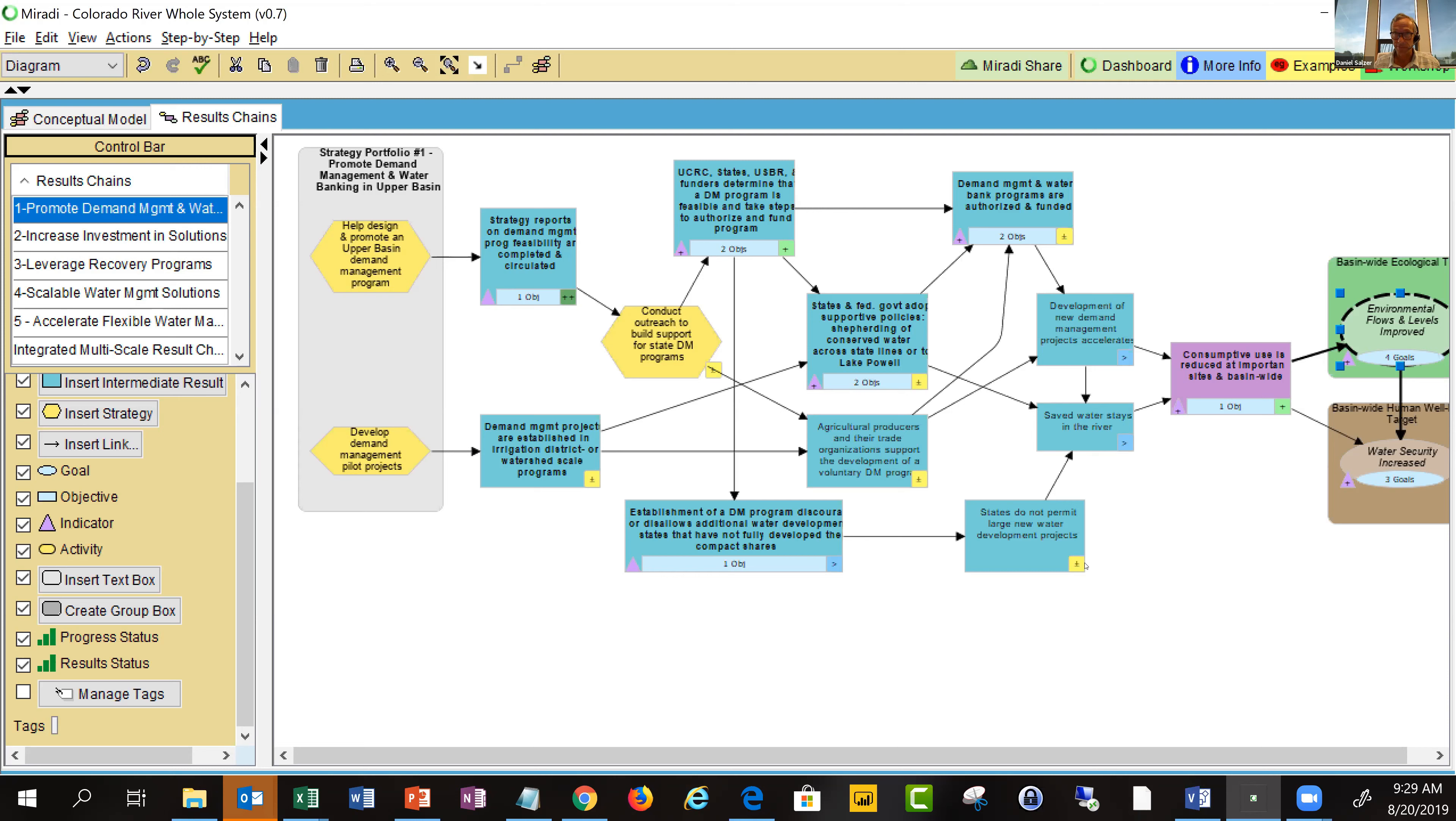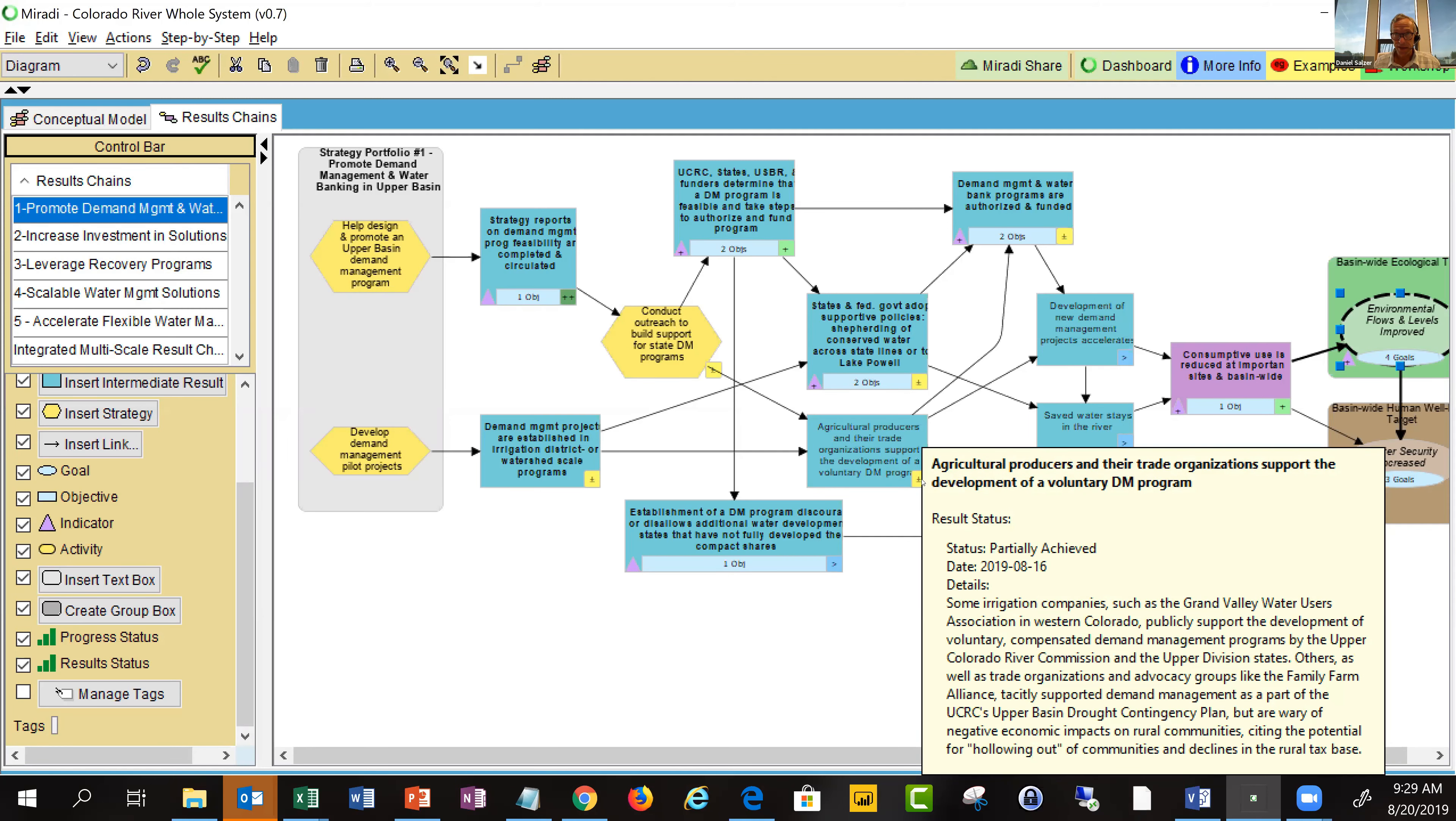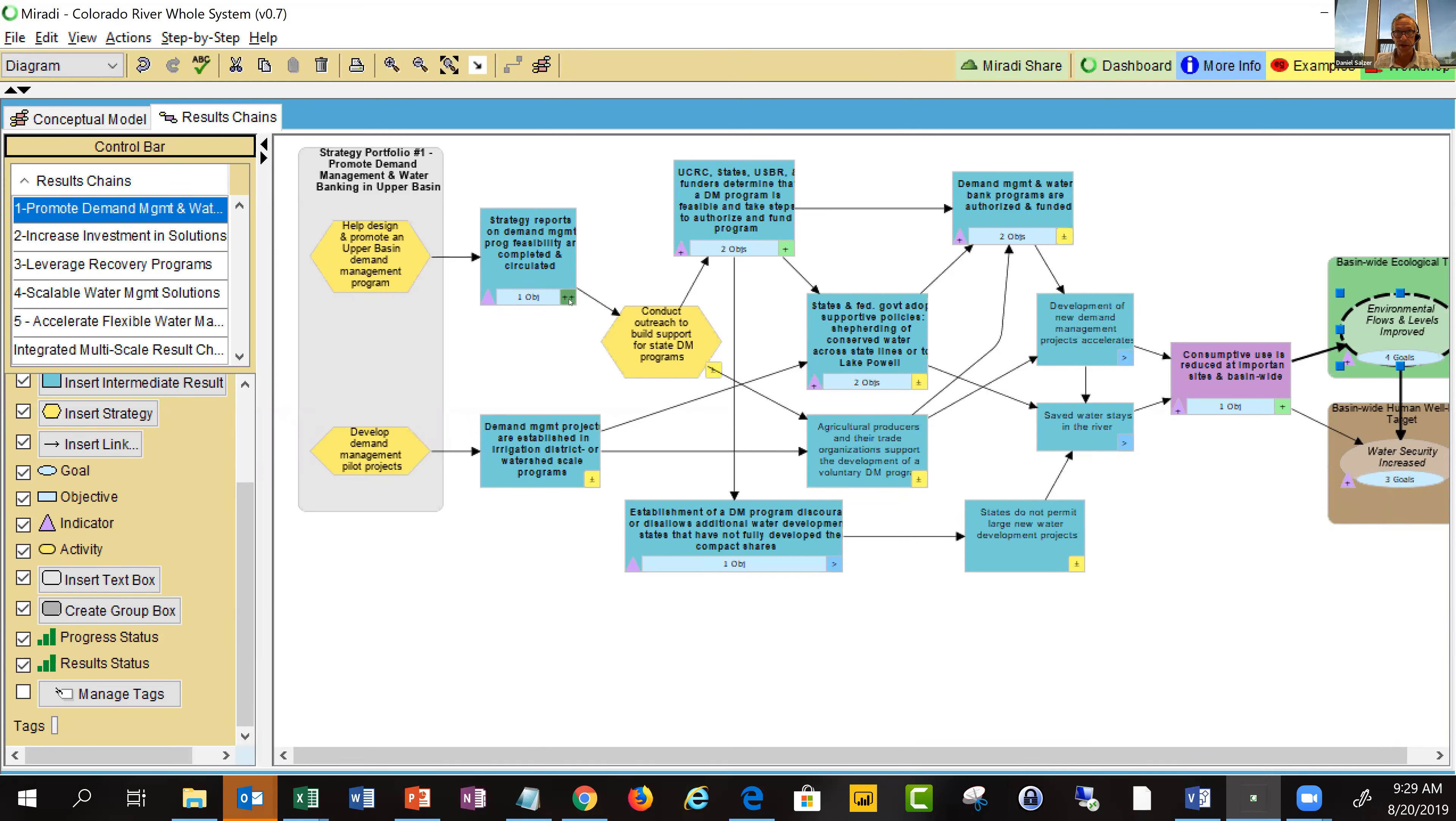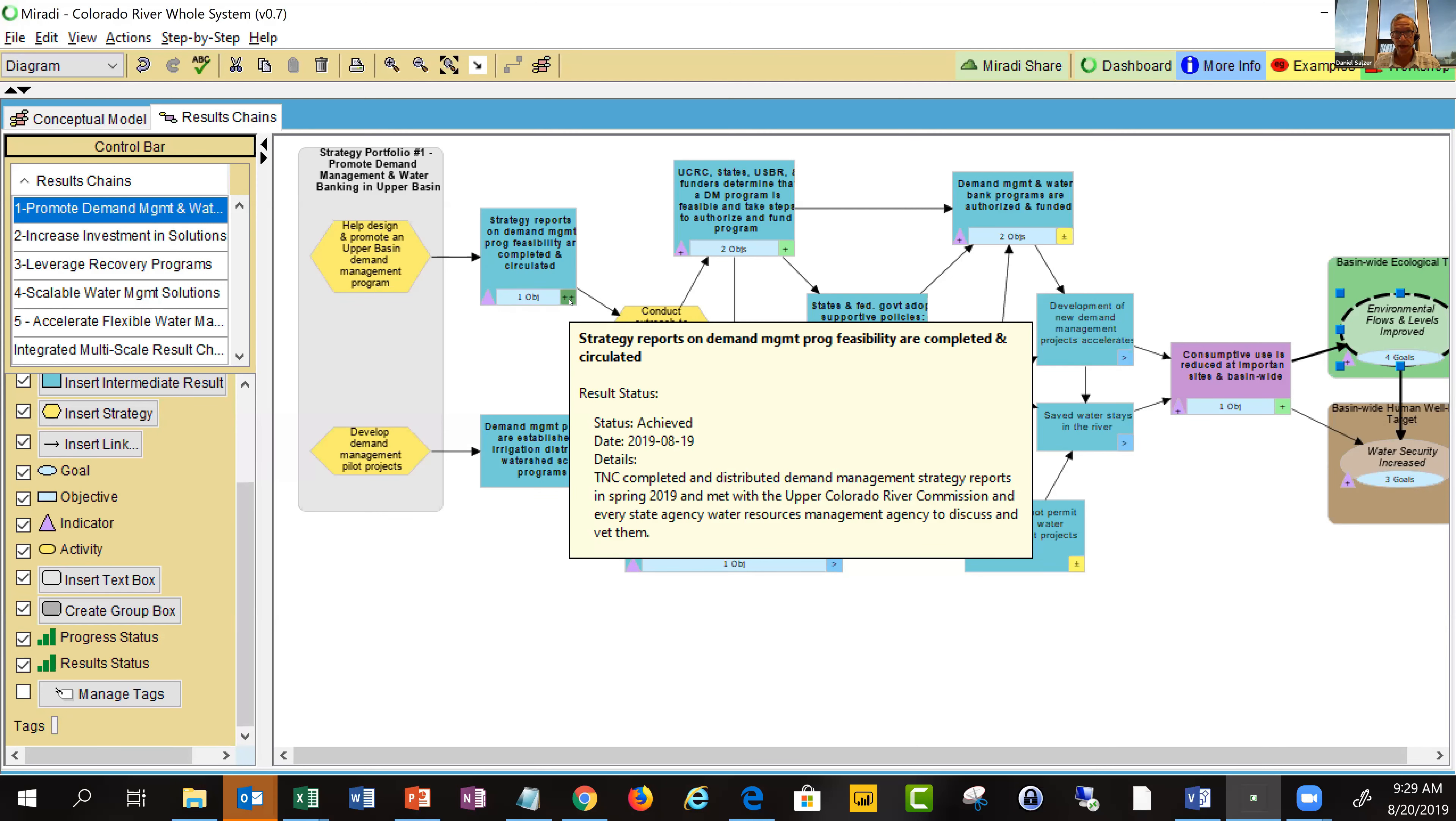If I put the cursor over here, you'll see some qualitative ratings. These would include things like partially achieved. You can see the description here that makes it easy for anyone reviewing this theory of change diagram to see what kind of progress is being made.